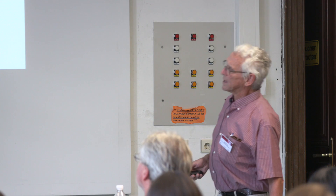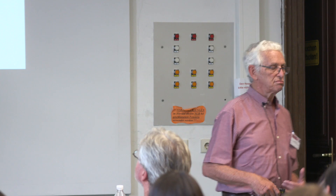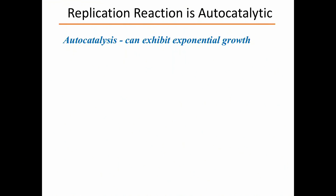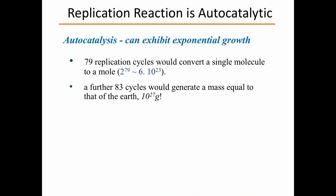This is just another chemical reaction — there are millions of chemical reactions. What's the big deal? It is a big deal because it's autocatalytic and it can exhibit exponential growth. If you start off with one replicating molecule and it replicates 79 times, you end up with a mole — the Avogadro number — because 2 to the power 79 is the Avogadro number. And in principle, a further 83 cycles of replication would give you a mass equal to that of the Earth. Exponential growth goes crazy very quickly.